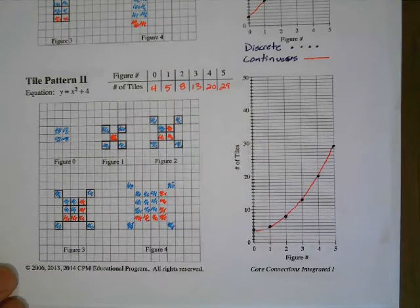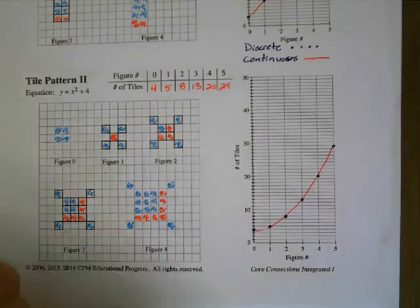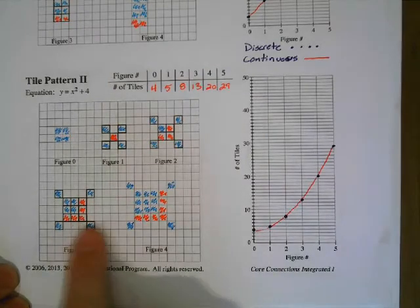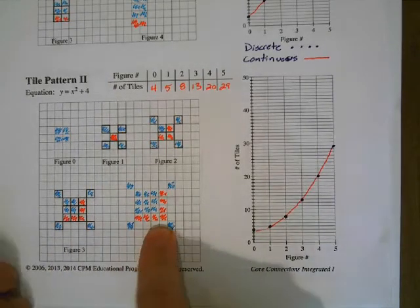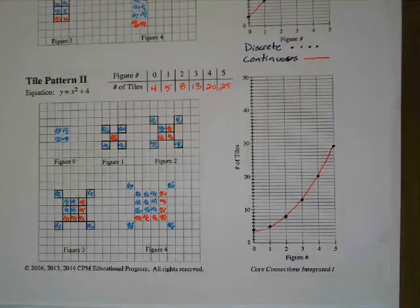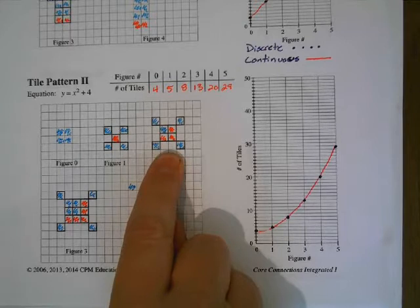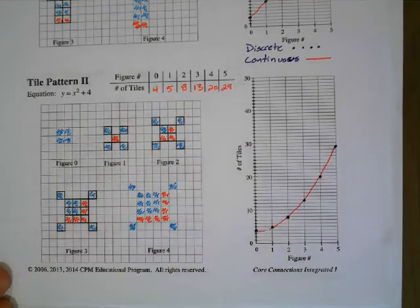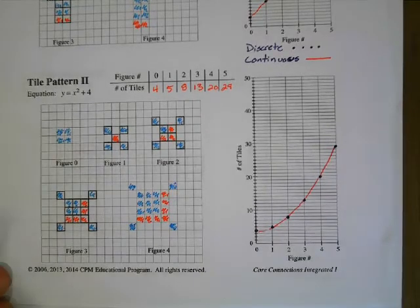So this is a different type of growth because we're not growing by the same amount each time. We grew by one here, three here, five here, and seven here. So it looks like we're growing by two more each time. So one to three, that's a growth of two more than the previous one. Three to five, it's two more. So it's growing by the same amount and then two more each time.